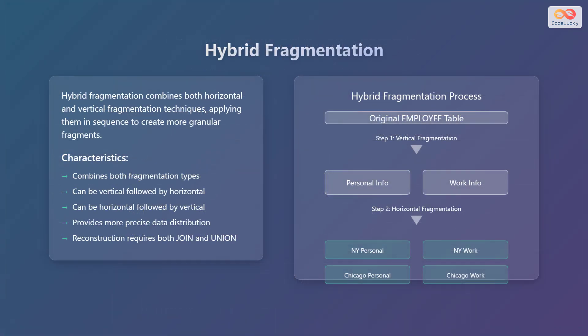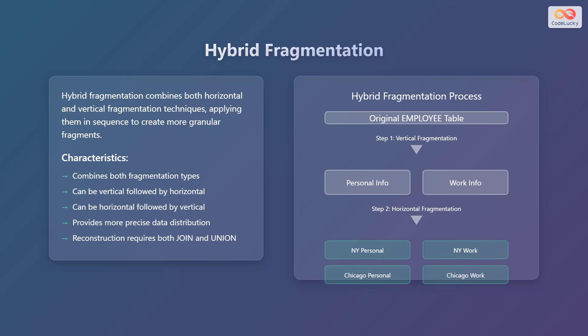Hybrid fragmentation combines both horizontal and vertical fragmentation techniques, applying them in sequence to create more granular fragments. This approach allows for more precise data distribution. Characteristics include: it combines both fragmentation types; fragmentation can be vertical followed by horizontal or horizontal followed by vertical; it provides more precise data distribution; and reconstruction requires both join and union operations. For example, using the employee table, we first divide it into two vertical fragments — personal info and work info — then apply horizontal fragmentation to each based on location, resulting in fragments: New York Personal, New York Work, Chicago Personal, and Chicago Work.